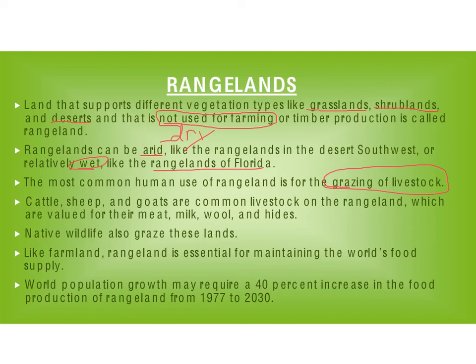A lot of times what we use rangeland for is allowing livestock to graze. If you think of the song Home on the Range, that's what they're talking about — a place where the deer and the antelope go and graze. From rangeland, we tend to get cattle for our beef, sheep for wool and food, and goats for goat meat, goat milk, and goat cheese. So most of the time when we look at what we get out of the rangelands, we get meat, milk, wool, and hides. Natural native wildlife also graze on these lands. Because we get food like meat and milk, and anything that comes from milk — cheeses, ice cream — we need these lands to maintain the world's food supply.